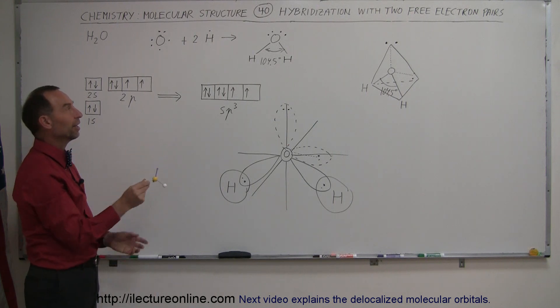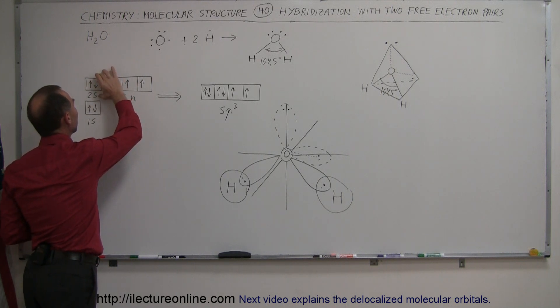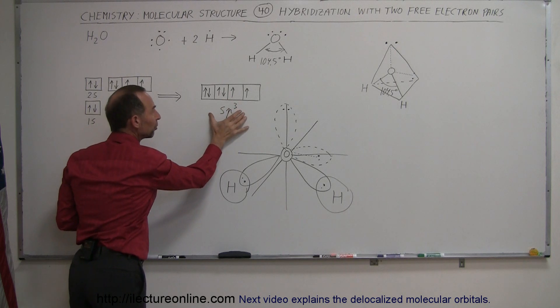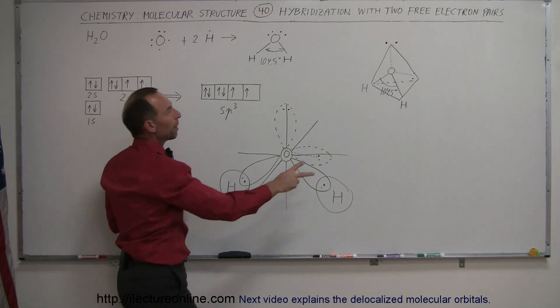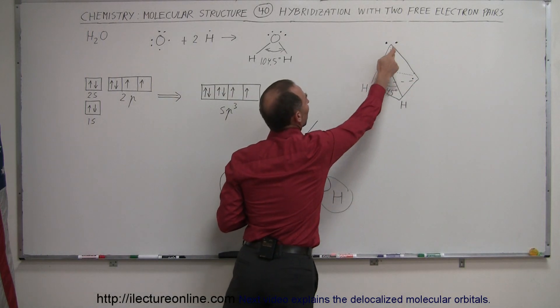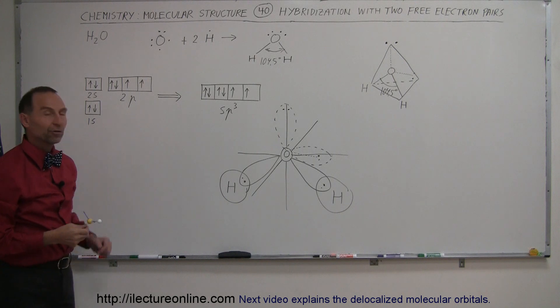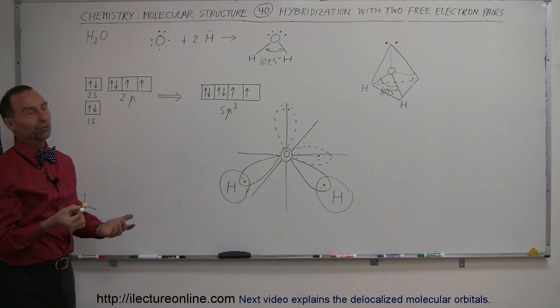There you can see that there's still hybridization taking place. The shape of the original orbitals—the 2s orbital and the three 2p orbitals—are changed to a set of four sp3 orbitals that are then pushed in a tetrahedral shape. Only two of them make bonds. The other two are filled with a pair of free electrons, therefore no longer able to bond. And there's the physical structure of a water molecule with hybridization and two free electron pairs.